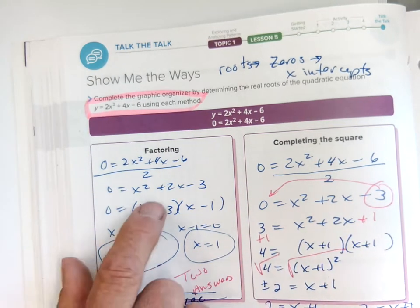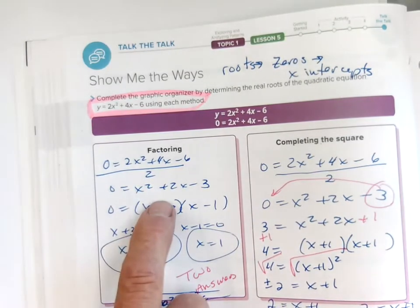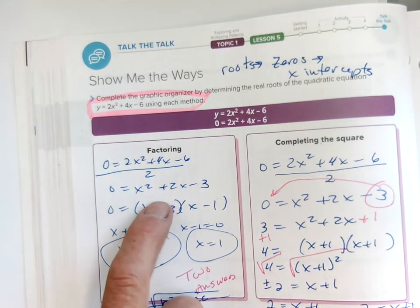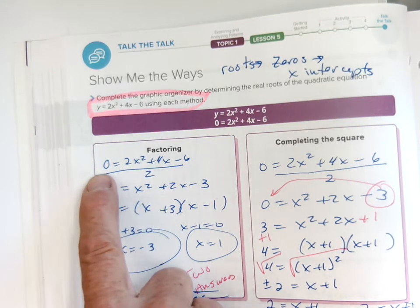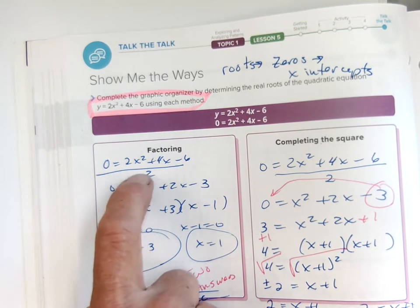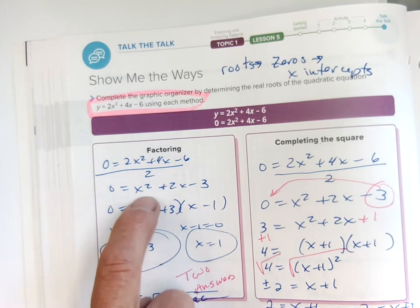First, factoring. This one will factor. That's always my favorite way—if it factors, it's pretty quick and easy. I set it equal to zero because we're looking for zeros. First thing I recognize is I can divide everything by two to make the problem easier. I get x² + 2x - 3.